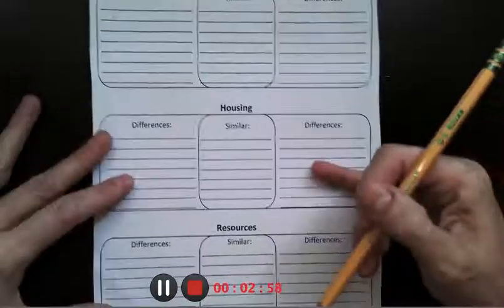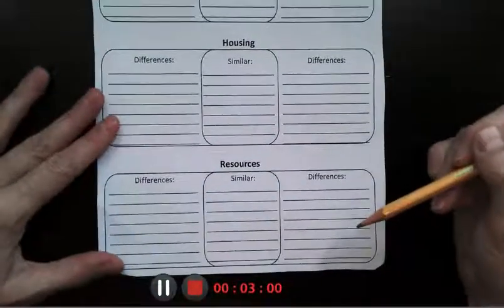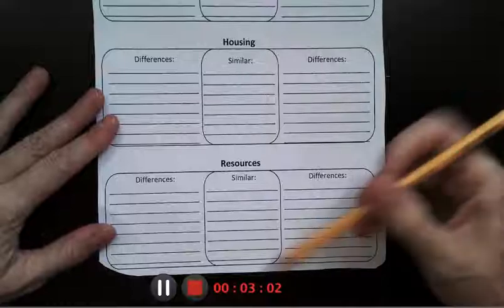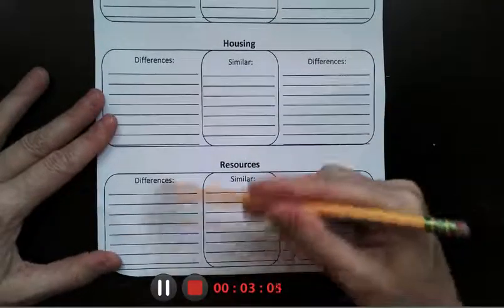And then finally, the resources that they used to survive off of. How were they similar? And how were they different?